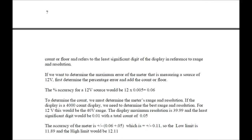To determine the maximum error of a meter measuring a 12V source: first determine the percentage error and add the count or floor. The percentage accuracy for a 12V source is 12 × 0.005 = 0.06. For a 4000-count display, the best range for 12V is the 40V range, with a maximum resolution of 39.99 and a least significant digit of 0.01, giving a count floor of 0.05. Therefore the accuracy is ±(0.06 + 0.05) = ±0.11 — so the low limit is 11.89V and the high limit is 12.11V.